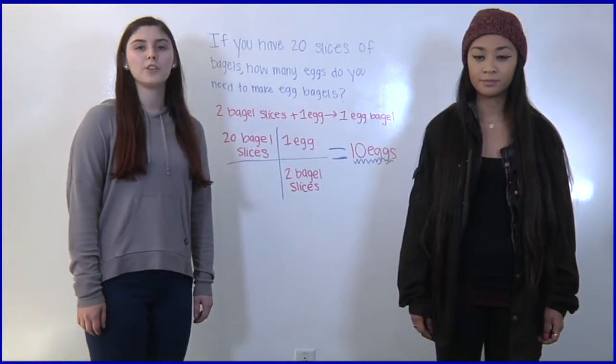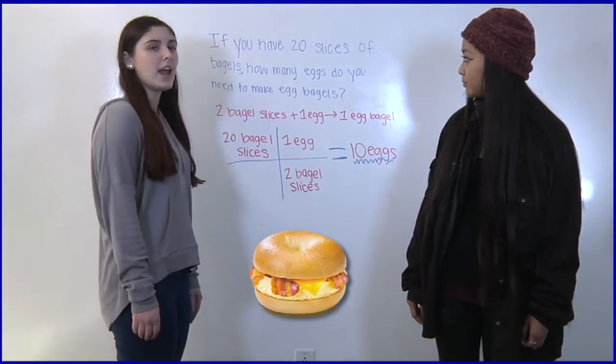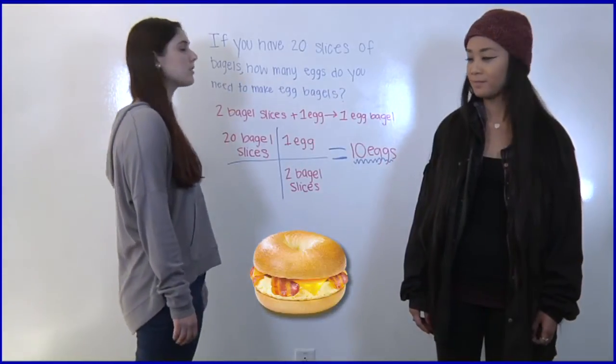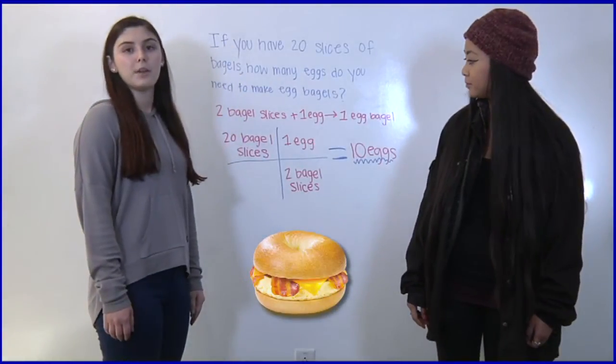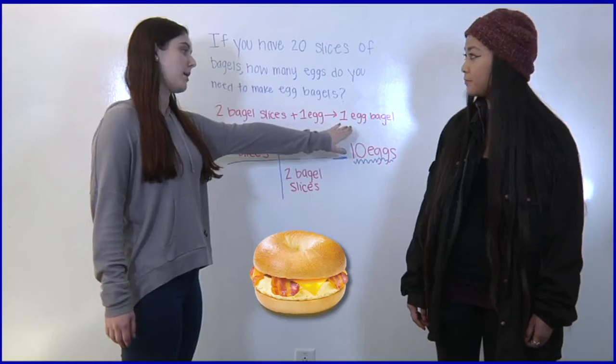Let's think of stoichiometry as making an egg bagel. The question is if you have 20 slices of bagels how many eggs do you need to make egg bagels? Let's think about what you need to make one egg bagel. You need two bagel slices, one egg and that equals one egg bagel.